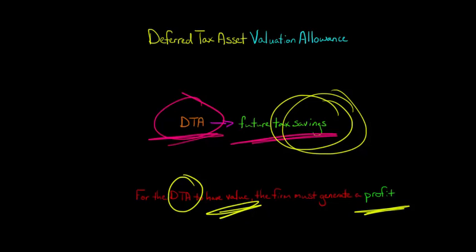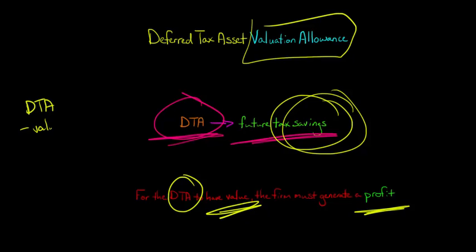If we can't generate a profit, we're not going to have any tax savings, and in that case we need to recognize a valuation allowance to reduce the value on the balance sheet. So we have Deferred Tax Asset minus the valuation allowance — it's a contra account, similar to how we have accounts receivable minus allowance for doubtful accounts. This is a contra asset account set up against our Deferred Tax Asset account.